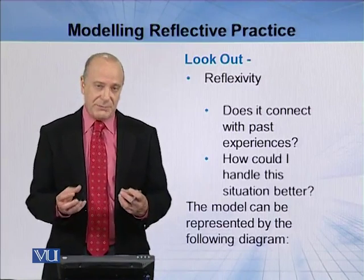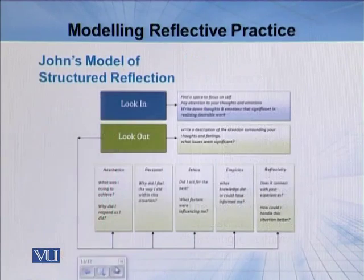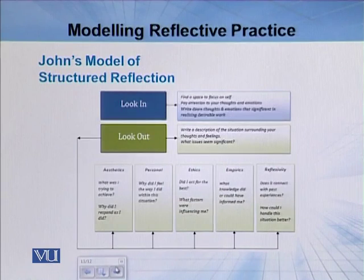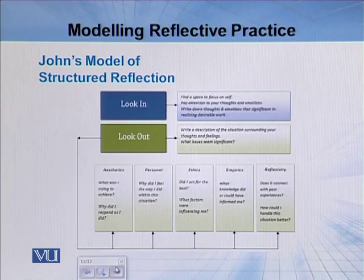What's very good about these perspectives is that we can represent them in a model which is very easy to understand. One component is looking in — finding the space, describing what happened, that very solitary component. Then looking out — describing it for somebody else, for our own purposes. Within looking out we get those different perspectives: the aesthetics perspective (what was the teacher trying to achieve), the personal perspective (how did they feel), the ethics (what factors were influencing them), the empirics (the knowledge they're drawing on), and then reflecting back on previous experiences and making cognitive connections.